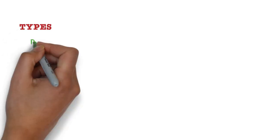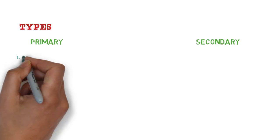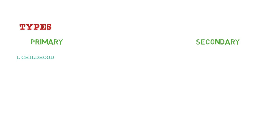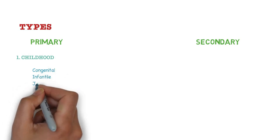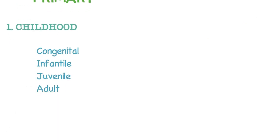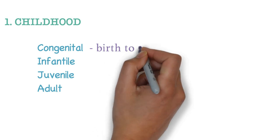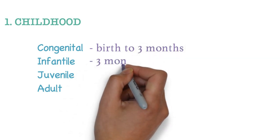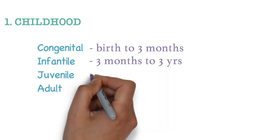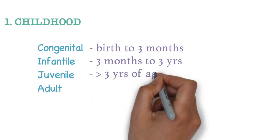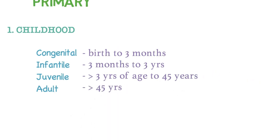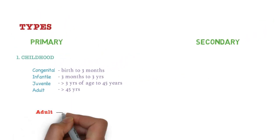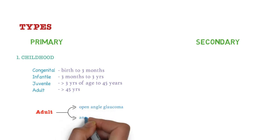There are two major types of glaucoma: primary and secondary. Primary is idiopathic — we don't know the cause and it is more common. In primary there are two subtypes: childhood and adult. In childhood there is congenital glaucoma, infantile glaucoma, and juvenile glaucoma. If glaucoma occurs from birth to three months it is congenital; three months to three years is infantile; more than three years to 45 years is juvenile; and 45 years onward is adult glaucoma. Adult glaucoma has two further subtypes: open angle glaucoma and angle closure glaucoma.